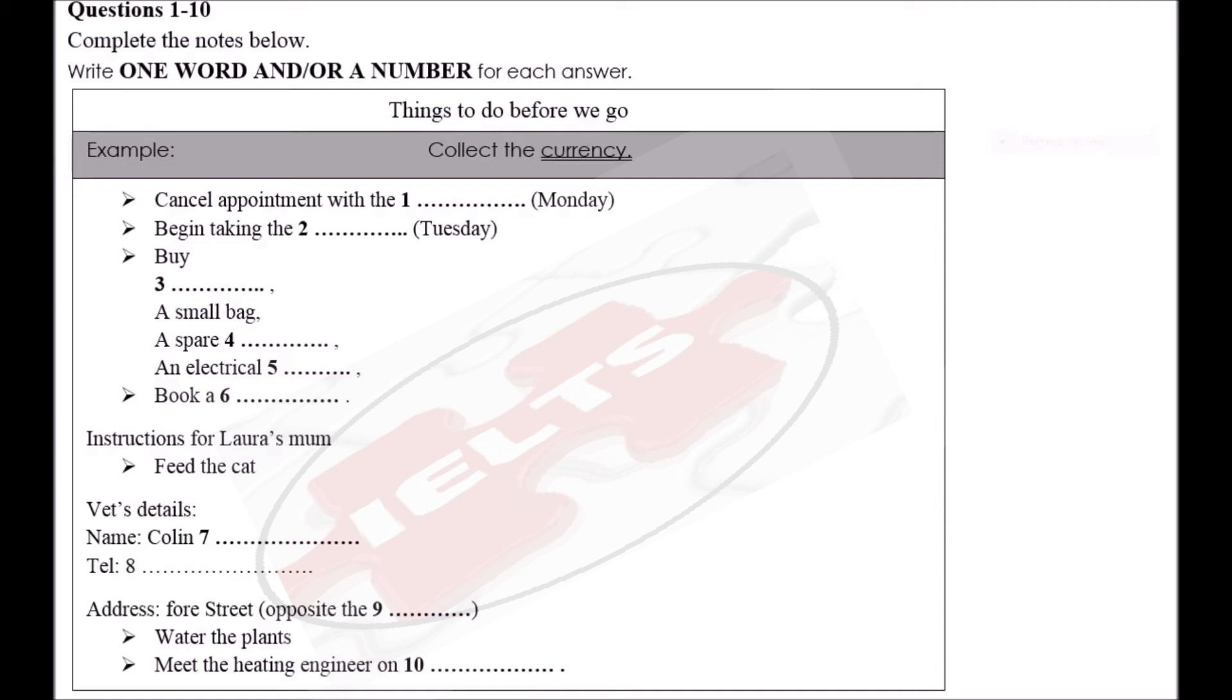Now listen and answer questions 7 to 10. Now let's see. Your mother said she'd come in regularly while we're away. So what do we want her to do? I'll write some instructions and we can give them to her tomorrow. Good idea. Well, the cat's the main thing. OK. Feed the cat.